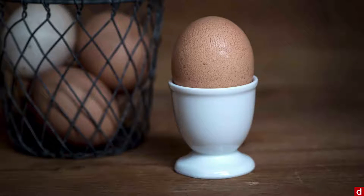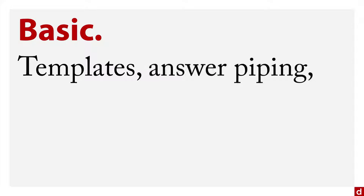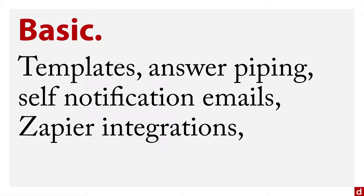Let's start with the small basket — let's start with basic. The basic free plan includes things like templates, and it includes answer piping, where you can take the answer from one question and feed it into the text of another question. It includes self-notification emails, meaning you the form designer can get emails when people respond. You can also get Zapier integrations, which allow you to channel information through hundreds of different apps — so you might be able to have people answer your questions and then put it into Salesforce or something like that.